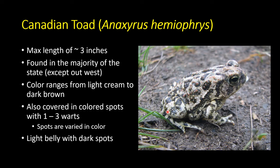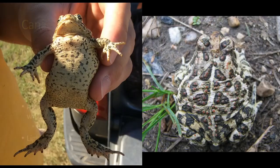The Canadian toad is about three inches in length on the larger side. They're found through the east and central part of the state but not the far west. Background color tends to be lighter cream to darker brown. They have colored spots that look greenish to brown, with warts inside those spots that can be a reddish-orange color — generally one to three warts per spot, though sometimes four to six. You don't get warts from touching toad warts — they're just called that. They have a cream or whitish belly covered in dark spots.